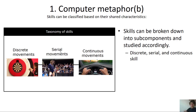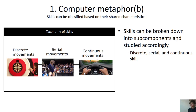In serial movements you have a series of actions to perform that all happen in the correct order. The final type is continuous movements — these are actions where there is no definitive beginning or end. Examples might be steering a wheel in a car or keeping your bicycle between the lanes as you're riding.